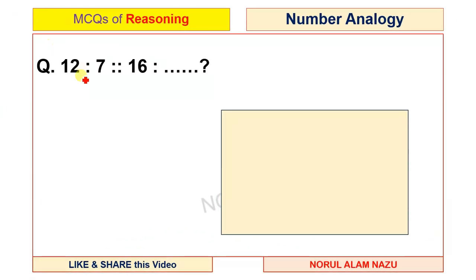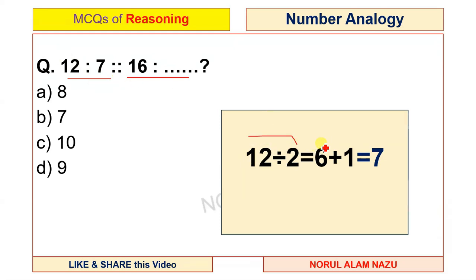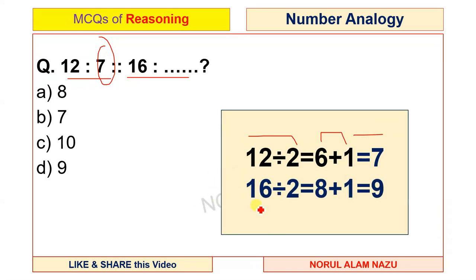Next question: 12 is to 7, 16 is to what? Options: 8, 7, 10, 9. 12 divided by 2 plus 1: 12 divided by 2 equals 6, and 6 plus 1 equals 7. For 16: 16 divided by 2 equals 8, and 8 plus 1 equals 9. The answer is 9.